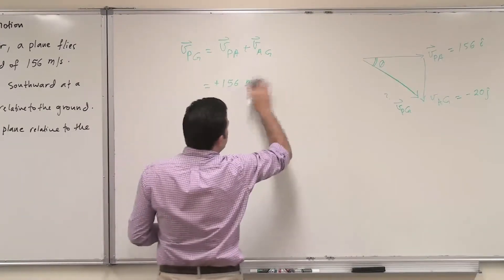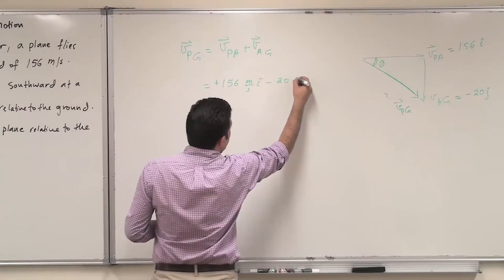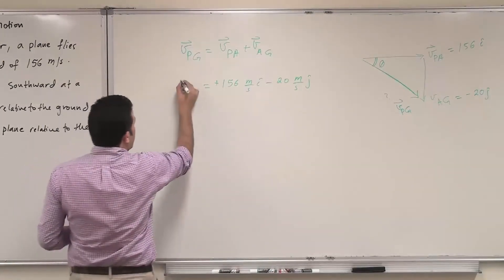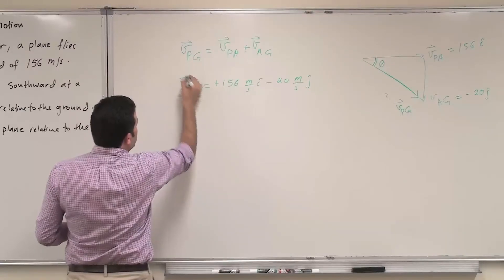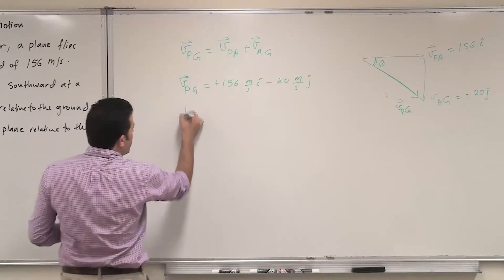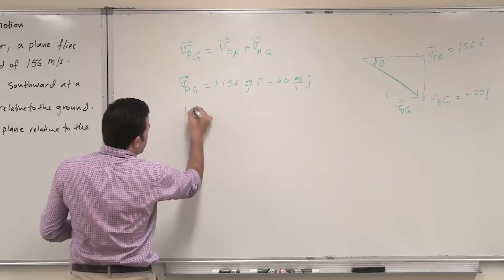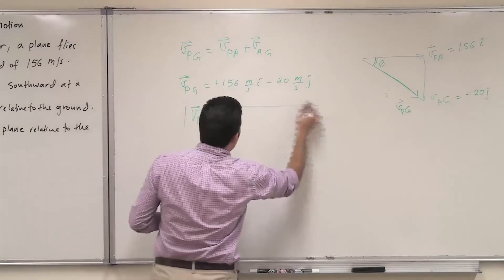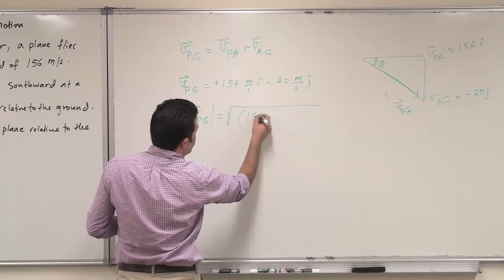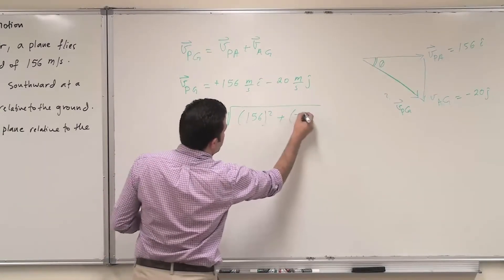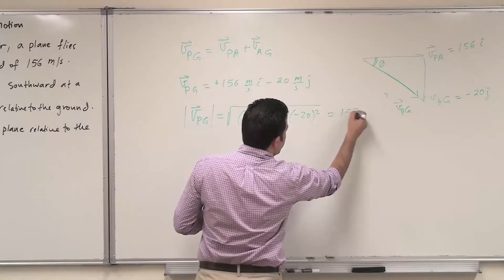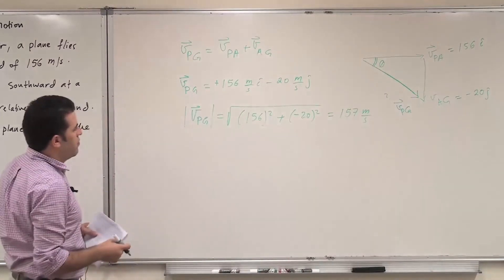Since the question asks for velocity in magnitude and direction, we first find the magnitude: the square root of 156 squared plus minus 20 squared, which gives a magnitude of 157 meters per second.